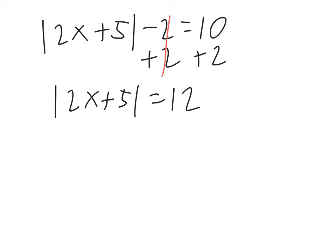Now we turn it into two separate equations. So first equation will be 2x plus 5 equals 12, and the other equation will be 2x plus 5 equals negative 12. So remember, two equations, one with a positive answer, one with a negative.